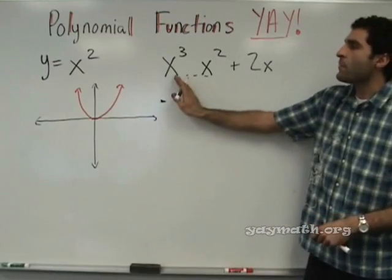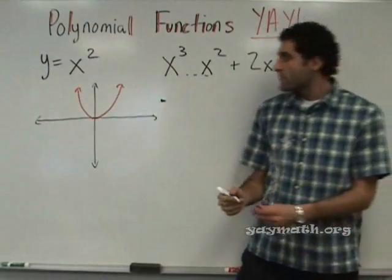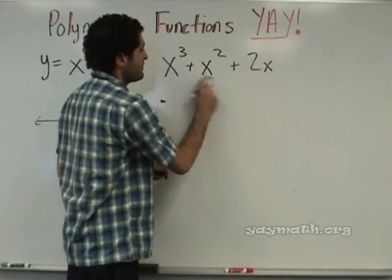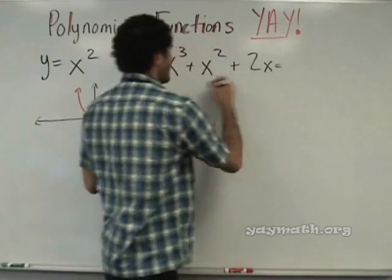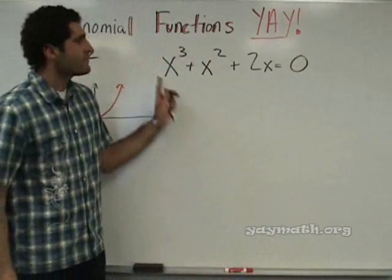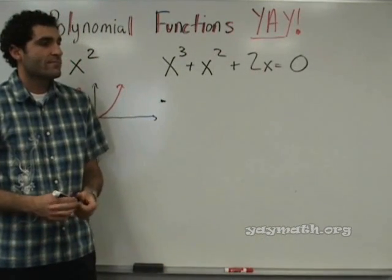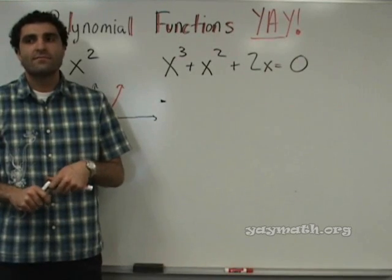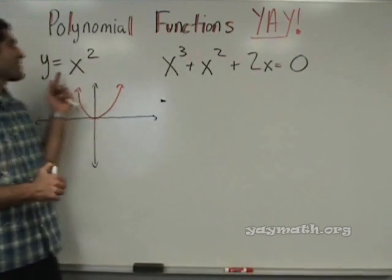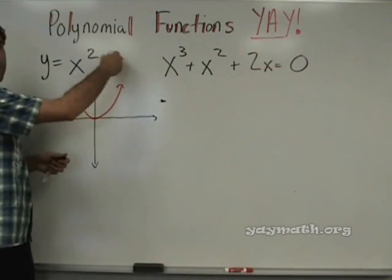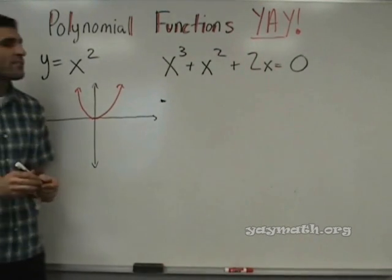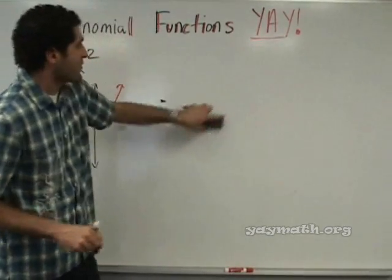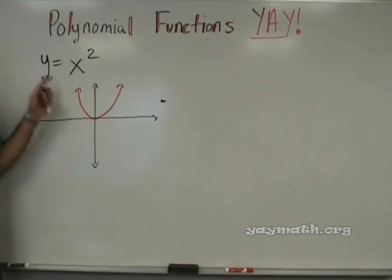So x cubed is a third degree function. It could be like x cubed plus x squared plus 2x, on and on, but this is still a third degree function — it's the biggest power. So we're focusing on the biggest power. Imagine this: x cubed plus x squared plus 2x equals 0. This is a third degree function because the biggest power is 3.